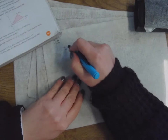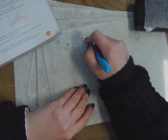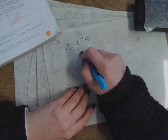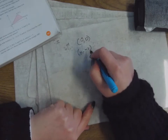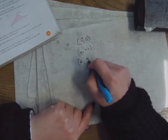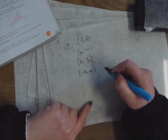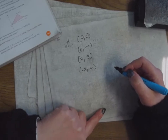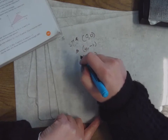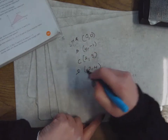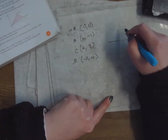A is the point (0,0), B is the point (4,-1), C is the point (2,3), and D is (-2,4). These are the vertices of a quadrilateral. Find the area of the quadrilateral by dividing it into two triangles ABCD. I'm going to do a quick sketch — a quick sketch tells you exactly what you need to know.